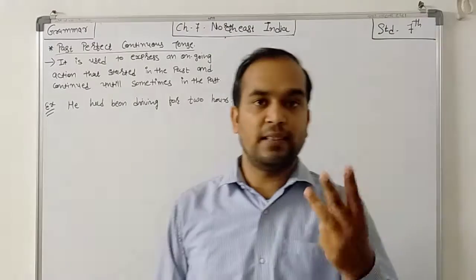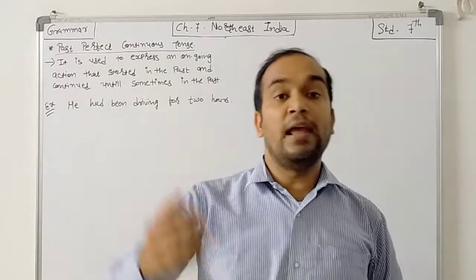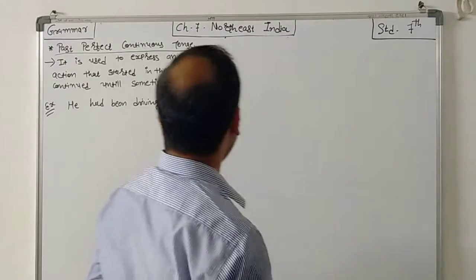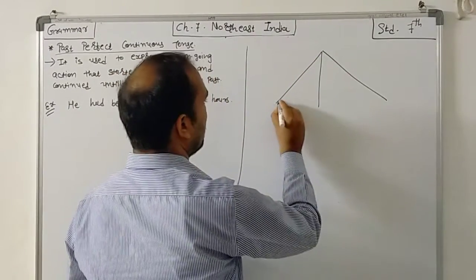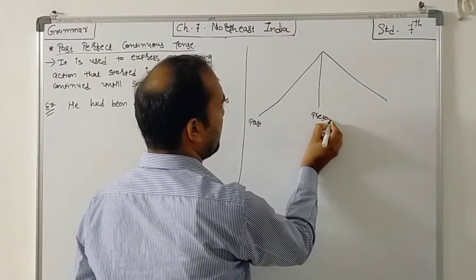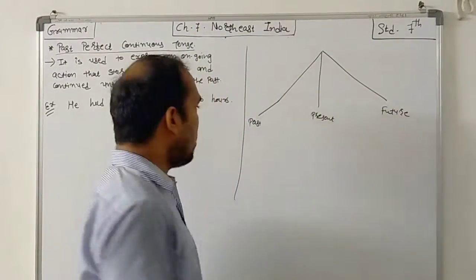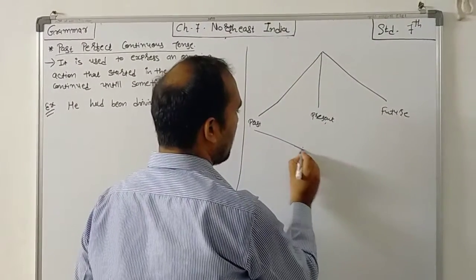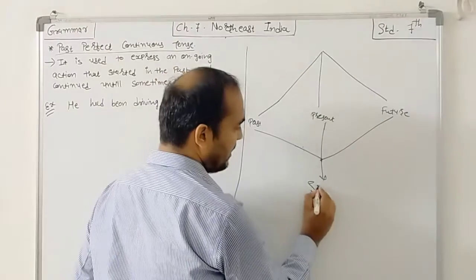Now we all know that there are three main tenses: present, past, and future. And according to each tense, there are four sub-tenses. So each tense has sub-four tenses — that is simple, continuous, perfect, and perfect continuous.